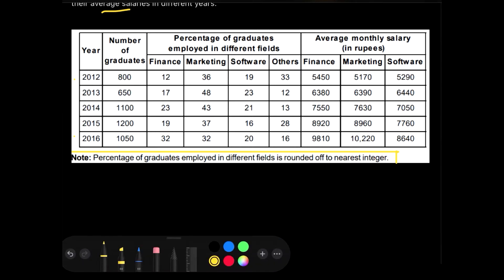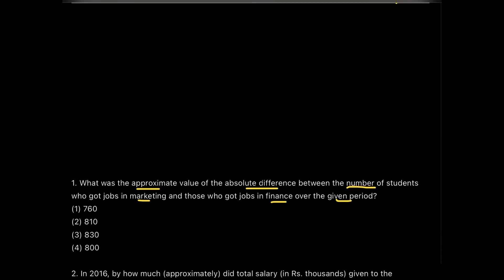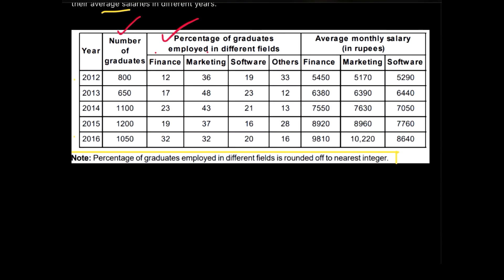If you focus, you'll find that the table gives the percentage of graduates, not the number of students, alongside the total number of graduates. So basically what we need to do is find out the number of students graduating in finance and marketing. If we scroll down and check, the comparison is made over the number of students in marketing and the number of students in finance. There are two methods of doing it.